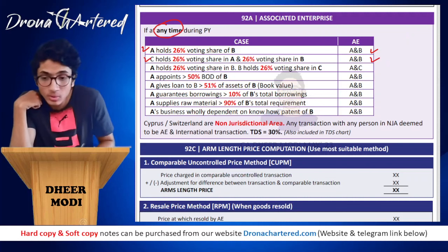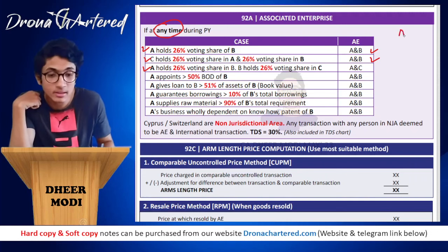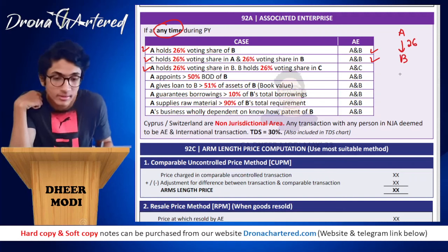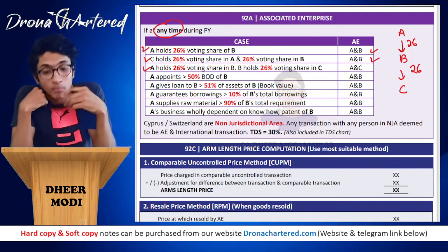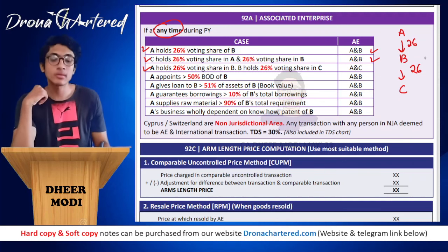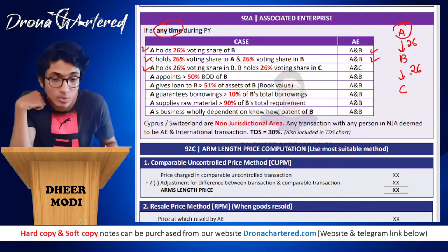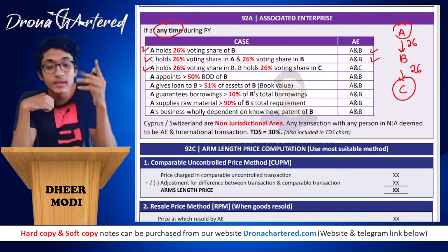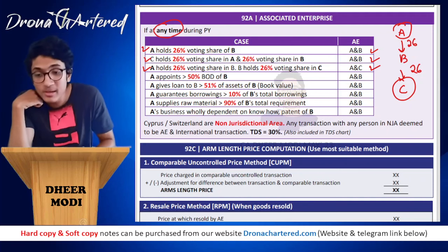Third condition: if A holds 26% voting share in B and B holds 26% voting share in C — note that 26% means 26% or more — then A and B are associated enterprises, B and C are associated enterprises, and importantly A and C are also associated enterprises.